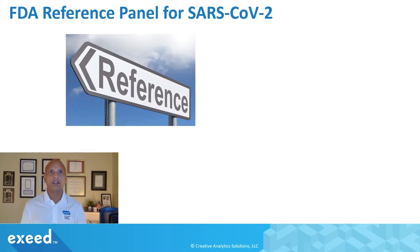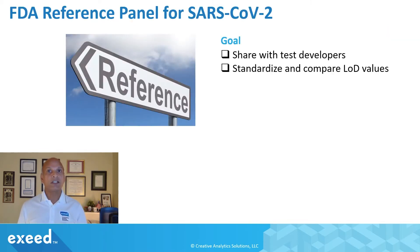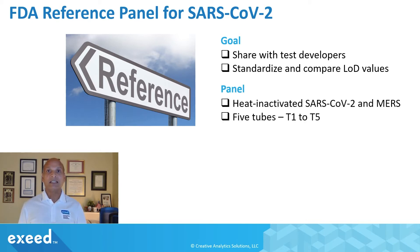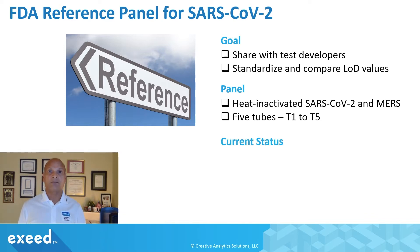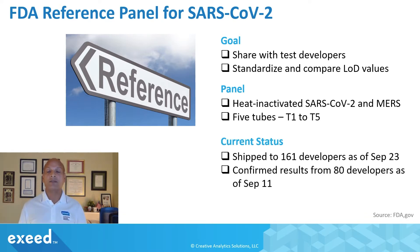It is not possible to compare LOD of different tests unless a reference panel and standard protocol is used, and that's what has happened now. The FDA reference panel goal is to share with test developers a standardized way to compare LOD values. The panel is a heat-inactivated SARS-CoV-2 strain and MERS-CoV strain, provided in five tubes T1 through T5. Only the concentration in T1 is known. The FDA has shipped this panel to 161 developers as of September 23rd, and confirmed results from 80 developers as of September 11th, published on FDA's website.